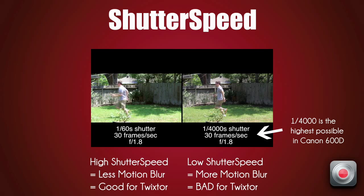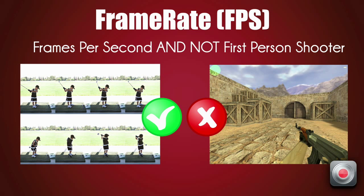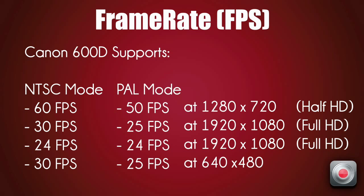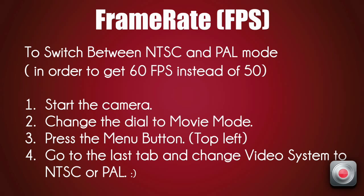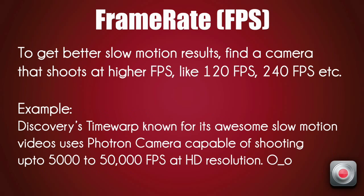Keep the shutter speed to something like 1/4000, which is as high as the T3i goes. Last but not least is the frame rate or fps — it decides how many images your camera captures per second. Advanced DSLRs like my T3i support shooting at half HD, 1280x720, at 60 fps, which is much better than shooting full HD at 30 fps, because those extra 30 frames can really help Twixtor eliminate warping completely.